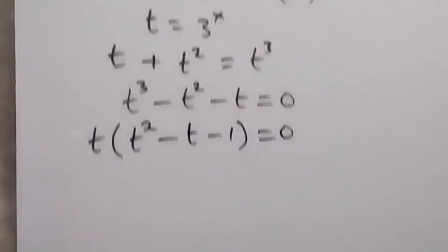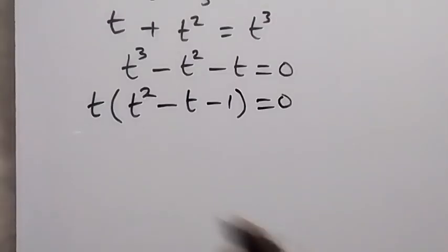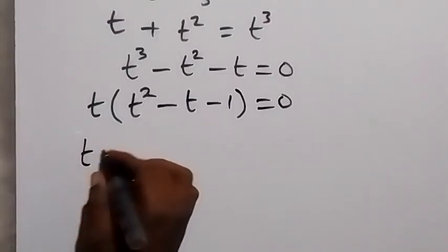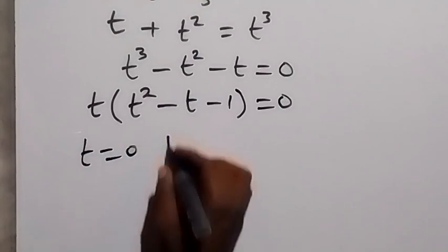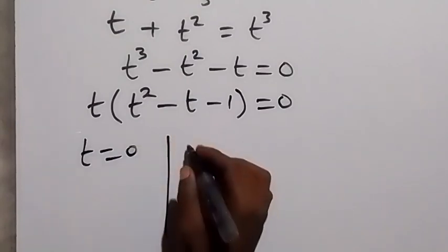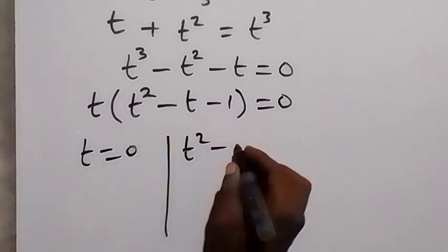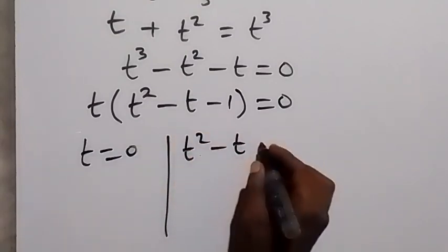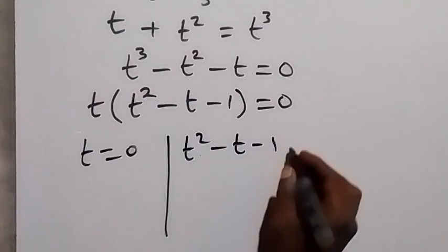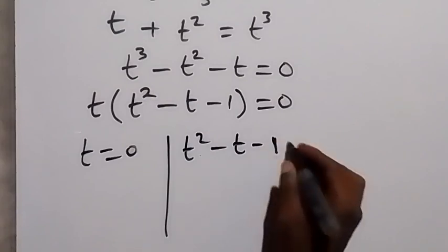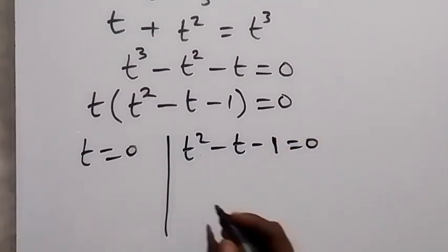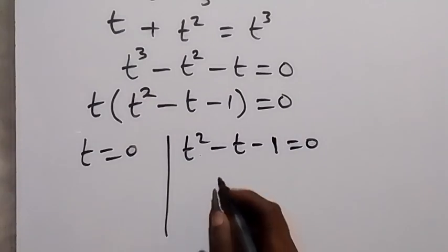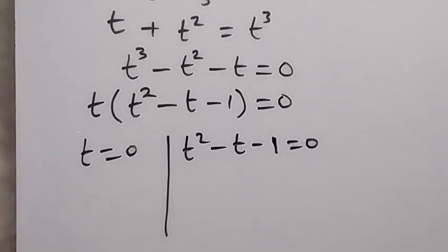So we have two cases here. The first case is t equals zero. Also we have t squared minus t minus one equals zero, and here we can solve this by using the quadratic formula.